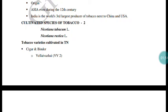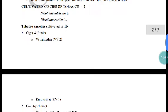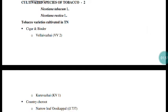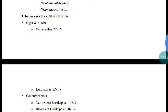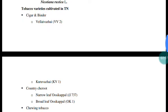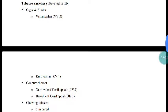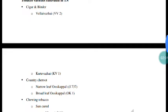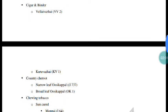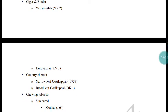Among the cultivated species, two species are very common. One is Nicotiana tabacum and the other is a variety used for over-purpose. This includes cigar and filler types of tobacco.